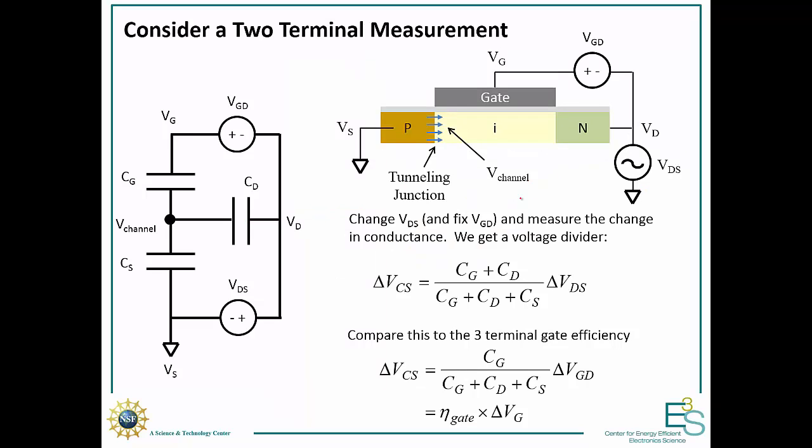Now I want to take a digression into a new measurement technique that allows us to get some new insights into the experimental data. I want to consider a two-terminal measurement on a tunneling field effect transistor. The basic idea is that in a T-FET we have our tunneling junction between the P and the I, and our gate voltage typically controls the potential across that tunneling junction. We can write a capacitive equivalent circuit model to figure out the electrostatic potentials in the device.